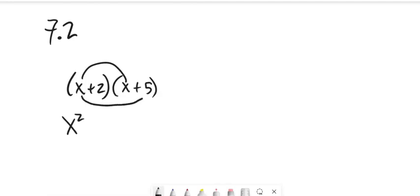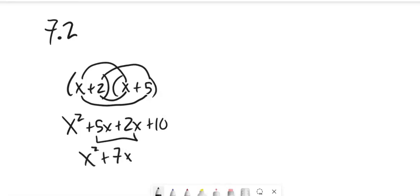If we multiply that out, x times x is x squared, x times 5 is 5x, 2 times x is 2x, and 2 times 5 is 10. If we add these two together we get x squared plus 7x plus 10.